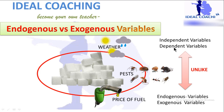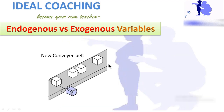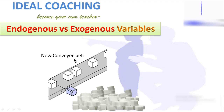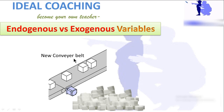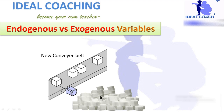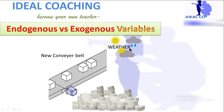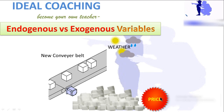Suppose you are introducing a new conveyor belt in your company when manufacturing sugar, and production keeps increasing because of that new conveyor belt. Then the new conveyor belt will be exogenous and sugar will be endogenous. Weather is also a purely exogenous factor because it is not being affected by sugar or the conveyor belt.